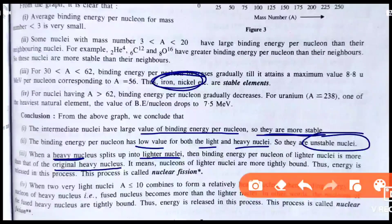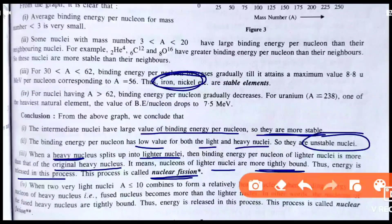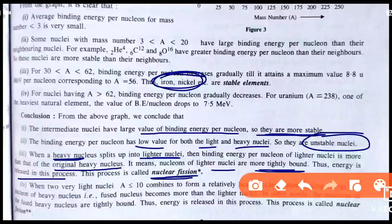It means the nucleons of lighter nuclei are more tightly bound. If energy is released, this process is called nuclear fission. When two very light nuclei — like oxygen, nitrogen, lithium, and hydrogen — combine to form a relatively heavy nucleus, and the binding energy of the nucleons of the heavy nucleus is greater, energy is released — this process is called nuclear fusion.